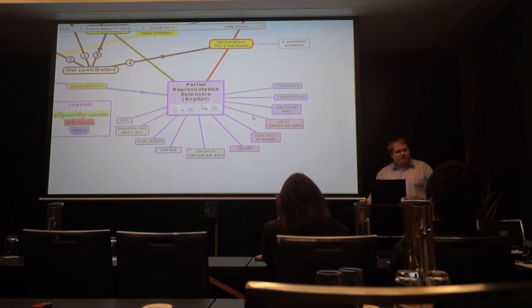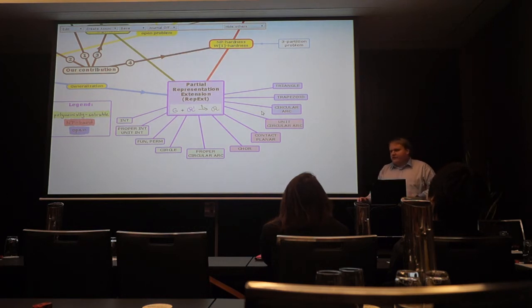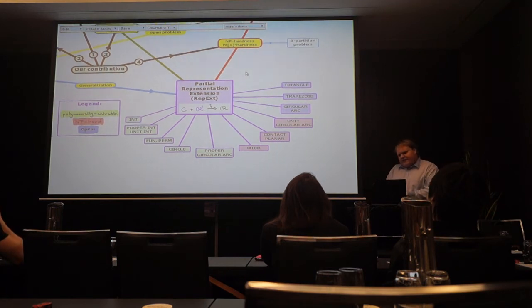And then we have also some open cases. These are classes of course which can be recognized in polynomial time. But the algorithms are very involved. And there is really no idea how to generalize it. Many steps do not generalize to partial representation extension. So it's an interesting question. Because it also could lead to much better understanding of these graph classes if it's possible. It could also be NP-complete. It could also imply something. So this was the problem we were studying.